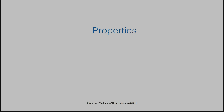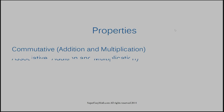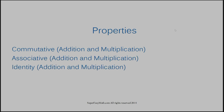The first three are commutative property, associative property, and the identity property. These three I grouped together because they are similar in one small way — all of these types of properties work when your problem is entirely made up of addition or it's entirely made up of multiplication.